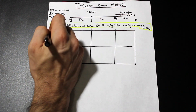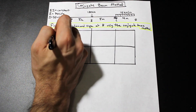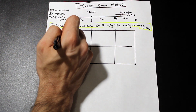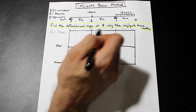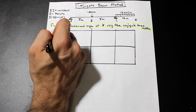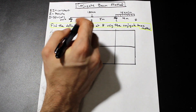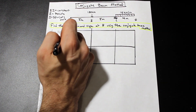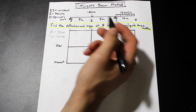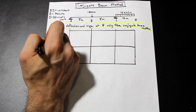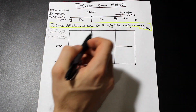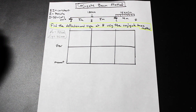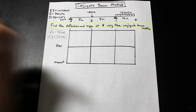Ay is equal to 78 — if you want practice, please go ahead and solve this on your own. Cy is 162 kilonewtons. So with that, we can go ahead and start the bending moment diagram.